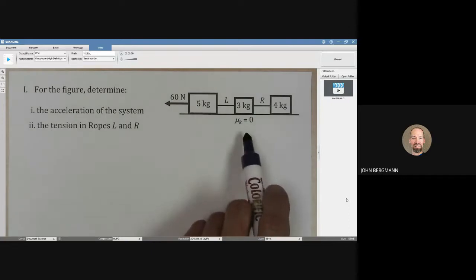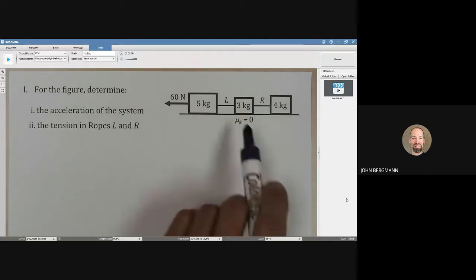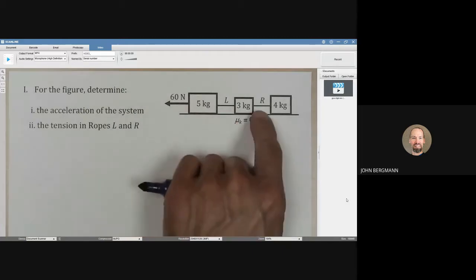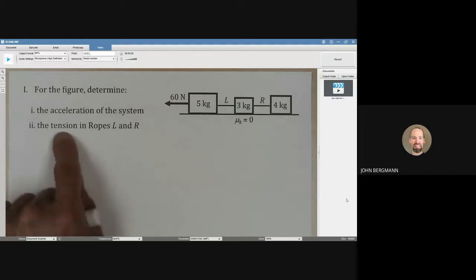Here we have a system. We have no friction here, which is very nice. We've got three masses. They're connected by ropes, rope left and rope right. And what we want is the acceleration of this system, and then we want the tension in these ropes.